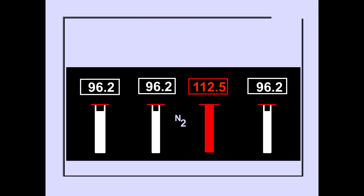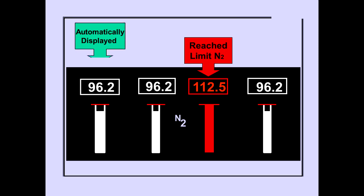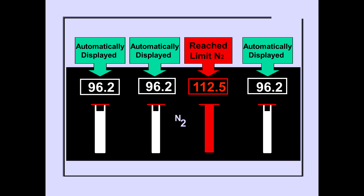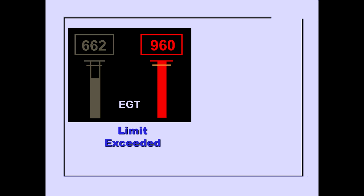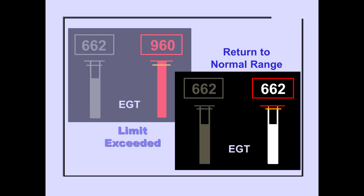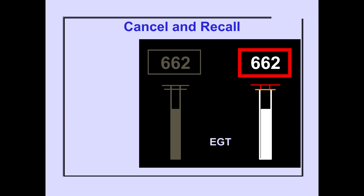If an N2 RPM reaches the operating limit, all N2 indications are automatically displayed. When the parameter returns to its normal operating range, the indication changes color back to white. The box surrounding the digital indicator remains red. The maximum level and time duration of the exceedance is recorded on the engine exceedance ICAS maintenance page. Pushing the cancel switch on the ICAS display select panel changes the box color to white. Pushing the recall switch displays the red box.